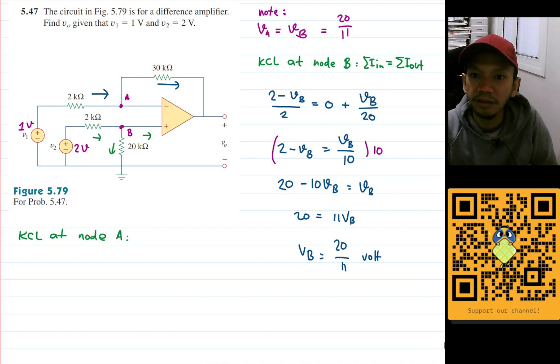KCL says that the current that goes in here is equal to the current that goes out. The only current that goes in is this one, and that will be 1 minus VA. VA is 20 over 11, so just put it there: 20 over 11 divided by 2. And that will equal to this current here that goes out. This one will be VA minus V0. VA is 20 over 11 minus V0 divided by 30.